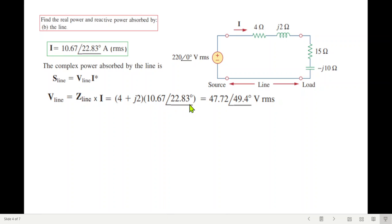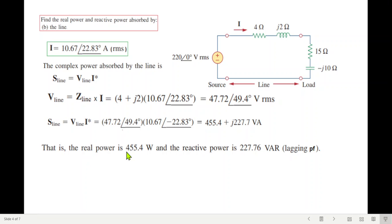Z line multiplied by the current gives V line. V line multiplied by I conjugate with sign change gives S line, the real power and reactive power for the line.